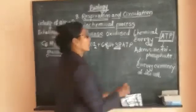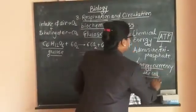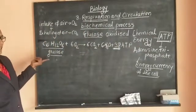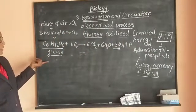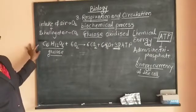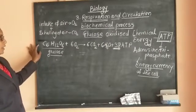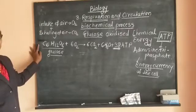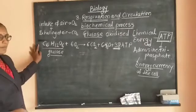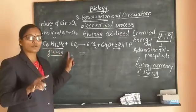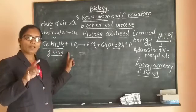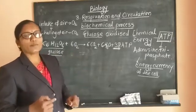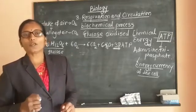Hence, ATP is called the energy currency of the cell. Now, in case of the equation, a single sentence question may be asked: write the chemical equation of respiration. Or, a question may be asked: how many molecules of ATP are formed from the oxidation of one glucose molecule? The simple answer is that one glucose molecule is oxidized and there is liberation of 38 ATP molecules.